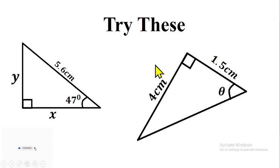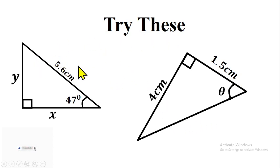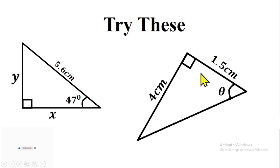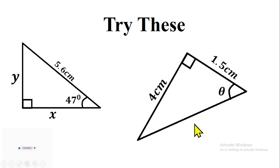So far you have been able to apply trigonometric ratio to find a missing side or a missing angle in a right-angle triangle. Now try these two questions on your own: from the first triangle, given a 47° angle, find side y and side x; and from the second triangle, given sides 47 and 1.5, find angle theta. Drop your answers in the comment section.